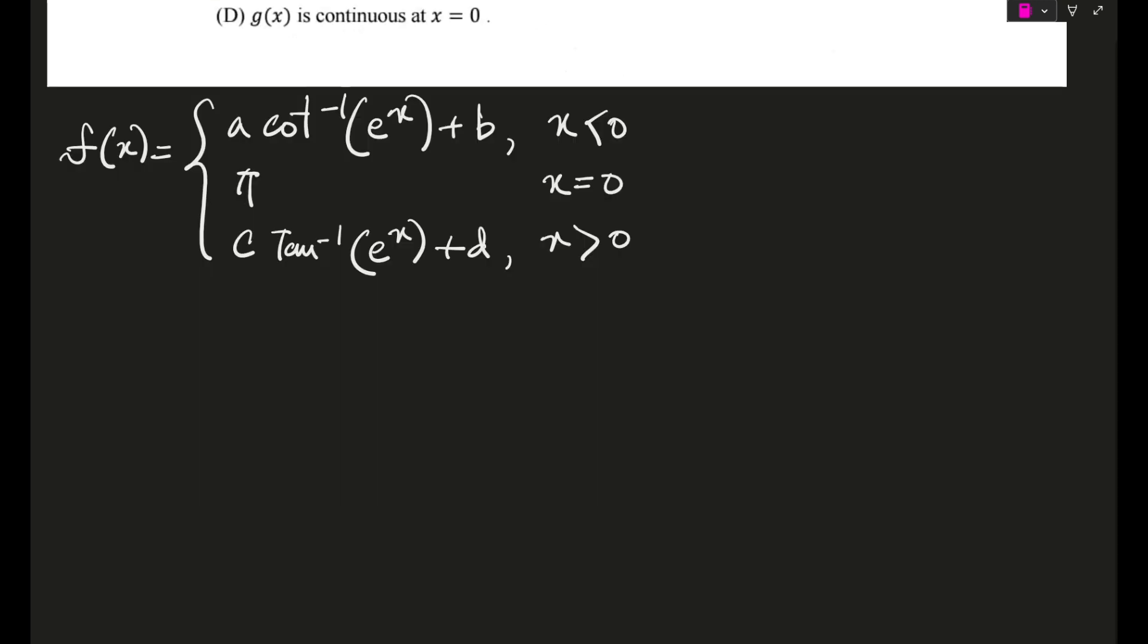Okay, so guys, here is the function definition, piecewise function definition for our function f of x. This pi value doesn't matter too much for us because we are going to find out the values. So for this to be continuous, first thing is everyone of us knows: limit x tends to zero minus of f of x would be equal to limit x is tending to 0 plus of f of x would be equal to